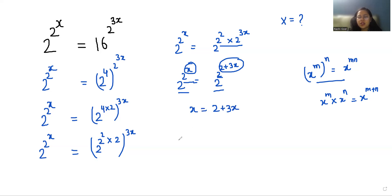plus 3x. So x - 3x = 2, -2x = 2, x = 2/(-2), so x = -1.